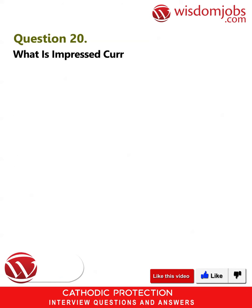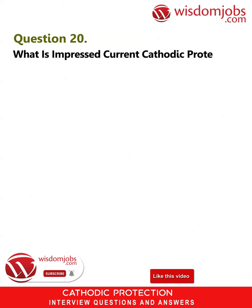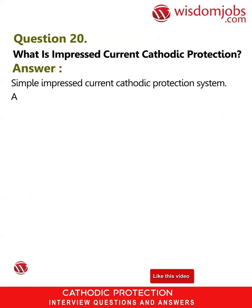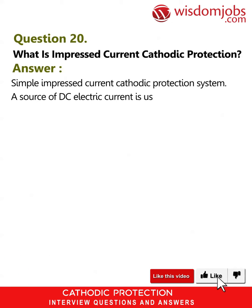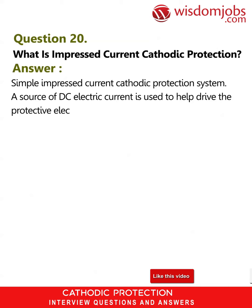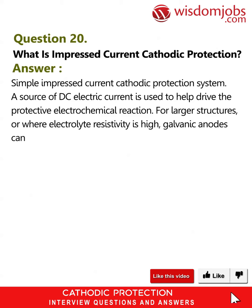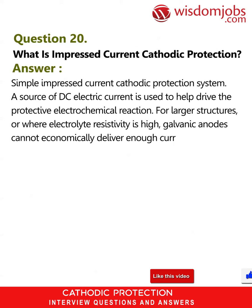Question 20: What is impressed current cathodic protection? Answer: In a simple impressed current cathodic protection system, a source of DC electric current is used to help drive the protective electrochemical reaction. For larger structures or where electrolyte resistivity is high, galvanic anodes cannot economically deliver enough current to provide protection.